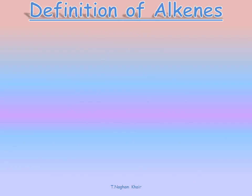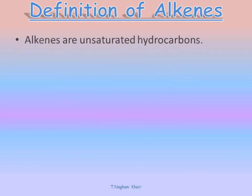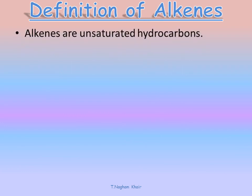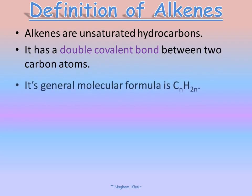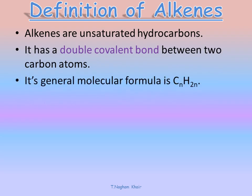First, the definition of alkenes. Alkenes are unsaturated hydrocarbons. Why are they unsaturated? Due to the presence of a double covalent bond between two carbon atoms. The general molecular formula of an alkene is CnH2n.